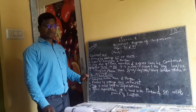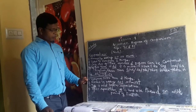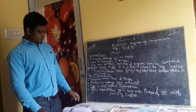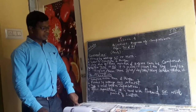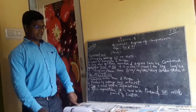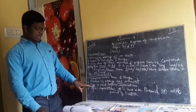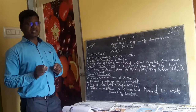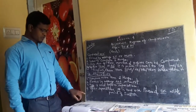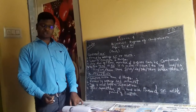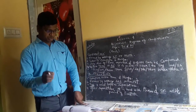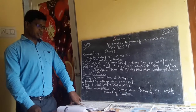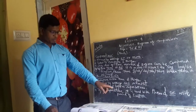Now let us talk about superlatives. First point: superlatives compare more than two things — not two things, but more than two things. Superlative degrees are formed by adding -est or 'most'. Third point: 'the' is used before superlatives. After the superlative, 'in' is used with places, and 'of' is used with a period of time. So remember all these things.